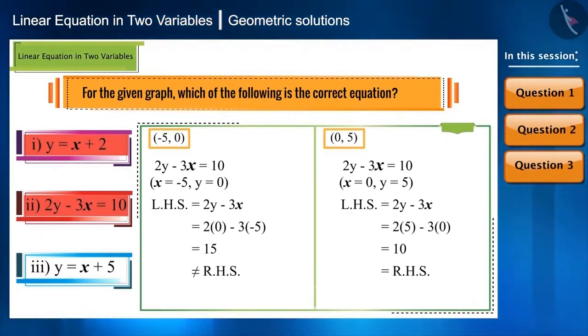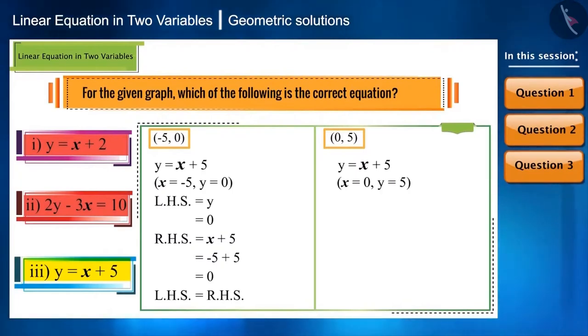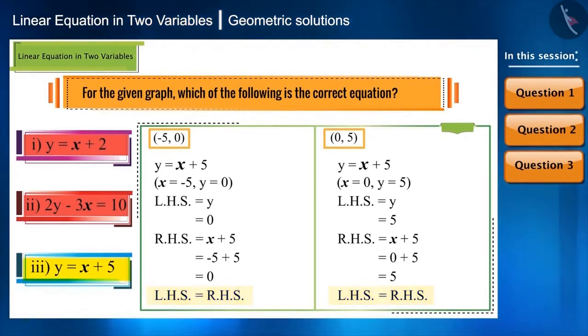Only when both the coordinates satisfy the equation, we can call it the equation of the line. Now, let's substitute these values in equation 3. We get the LHS equal to the RHS for both the coordinates. Therefore, equation 3 is the equation of this graph.